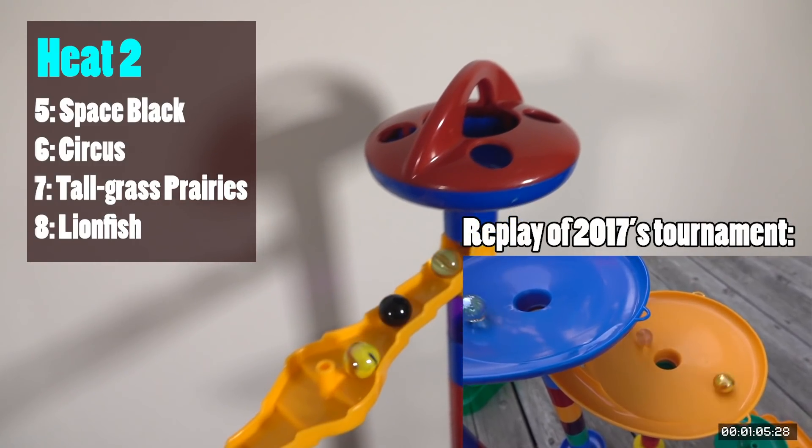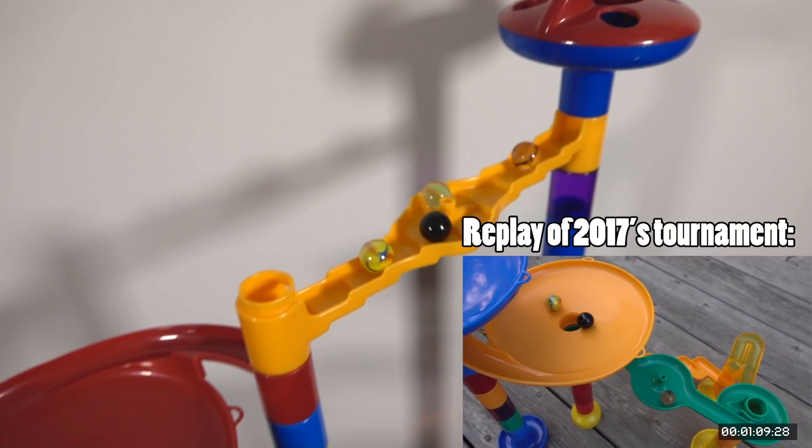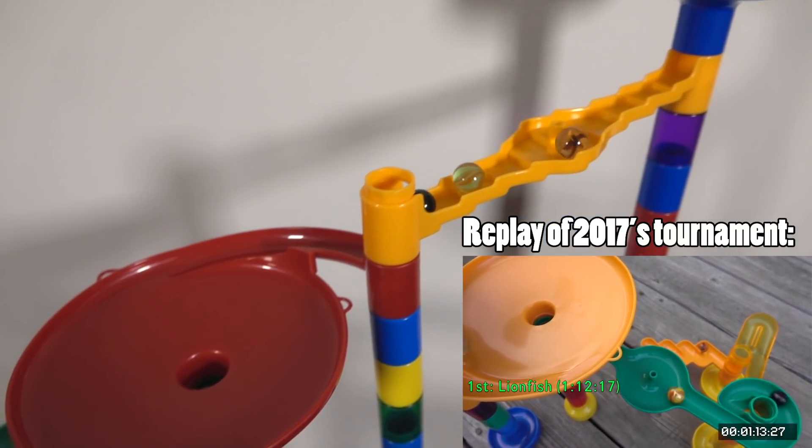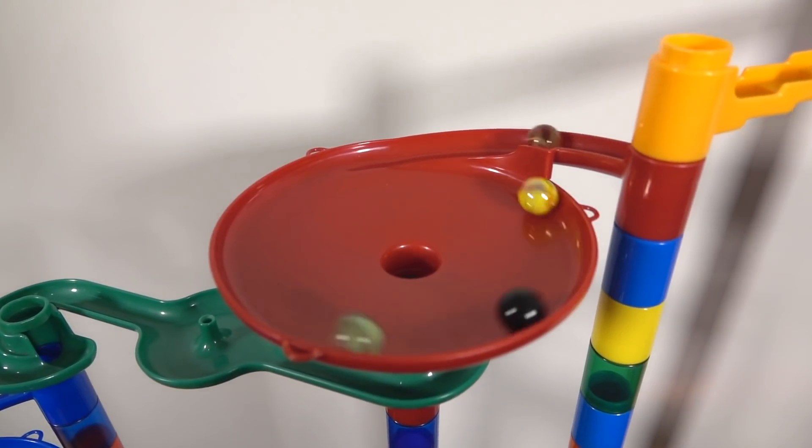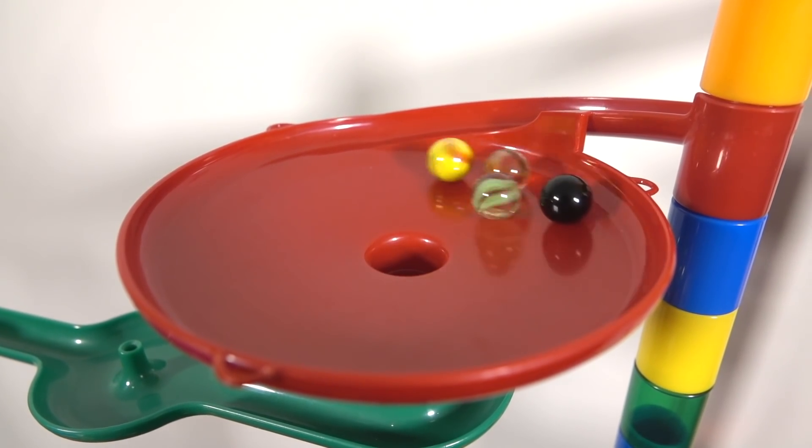And race number two now. Take a look at what happened in 2017. Lionfish used both Space Black and Circus as his advantage to easily get that first place spot. Space Black coming down second, Circus third. Only time will tell what the results will be this year.